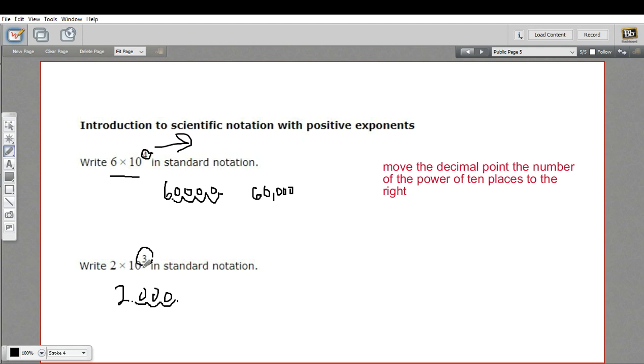Now, 10 to the 3rd is 1,000. So really, this problem is 2 times 1,000. And we came up with an answer of 2,000. So that makes sense. So that is a little bit of work with scientific notation.